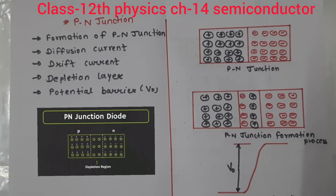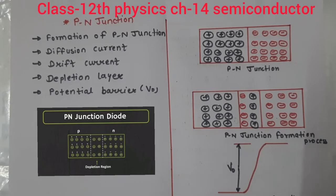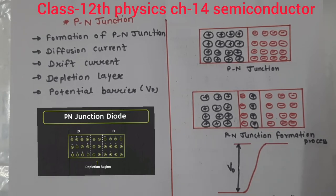Before I start, in our last video lecture we discussed the types of semiconductors - intrinsic semiconductor and extrinsic semiconductor. Intrinsic semiconductors are pure semiconductors, and they behave like an insulator. Conductors and insulators are not used in electronic devices.